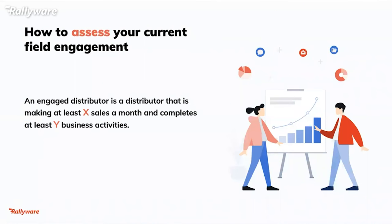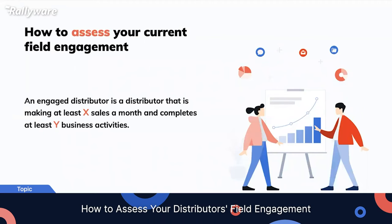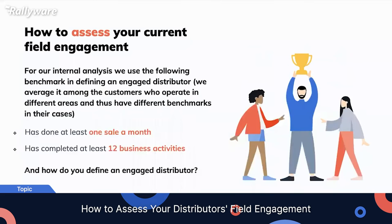An engaged distributor is one that is making at least a certain amount of sales per month and at least a certain number of business activities. From that standpoint, we can see business activities grow, and ultimately sales and recruiting grow as well.